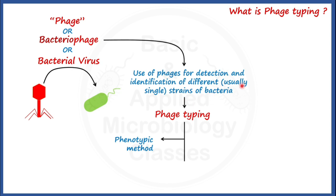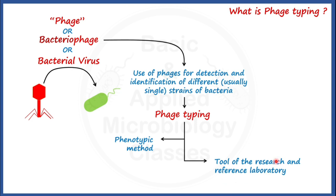Phage typing is an important tool of the research and reference laboratory. Moreover, phage typing is widely used for epidemiological purposes, like disease surveillance and disease outbreak investigation studies.